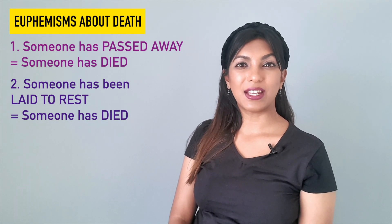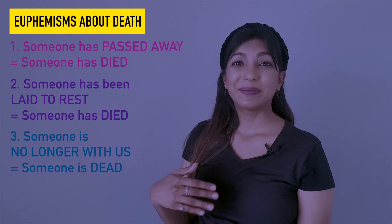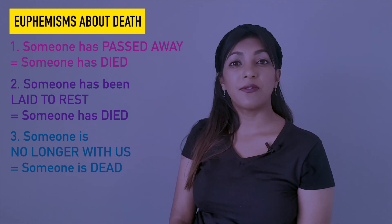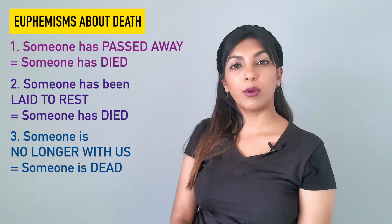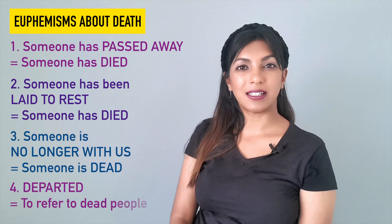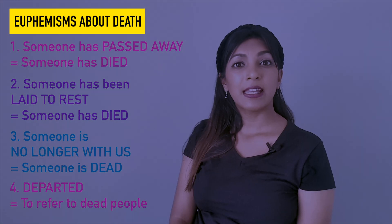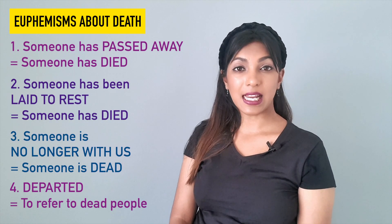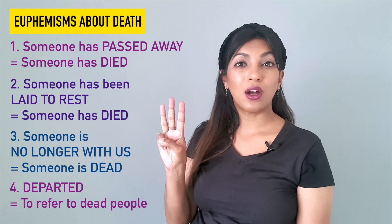If we want to say someone is dead, we can say they are 'no longer with us.' For example, 'Jack's father is dead' sounds cold and unfeeling, so a native speaker would say 'Jack's father is no longer with us.' To refer to dead people, we use 'departed' — instead of 'the names of the dead people,' we say 'the names of the departed.' So the death euphemisms are: passed away, laid to rest, no longer with us, and departed.